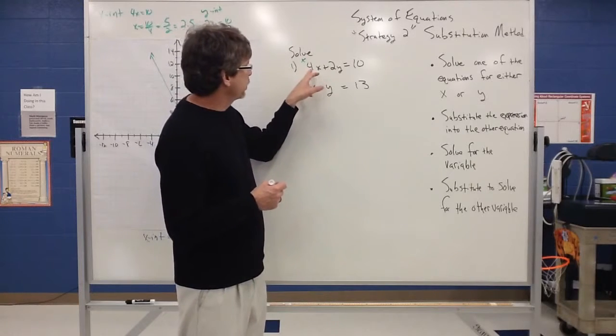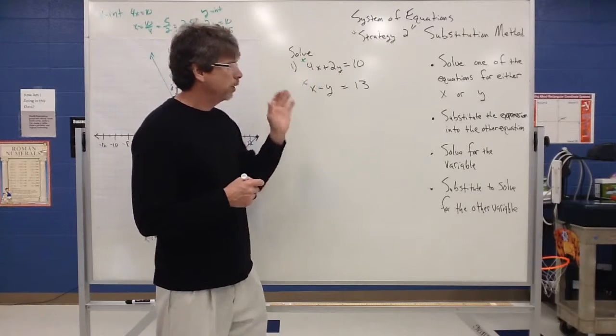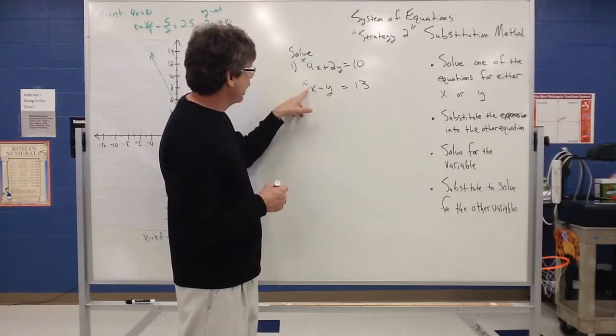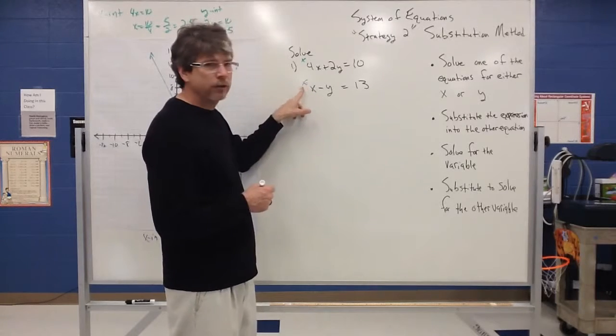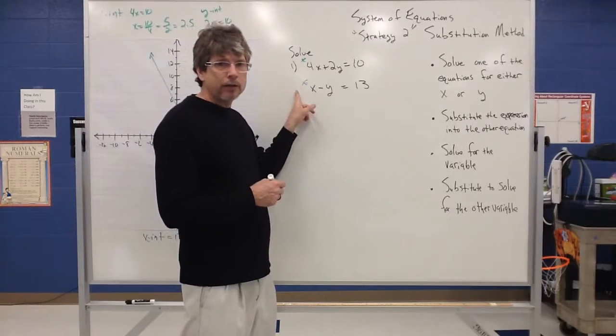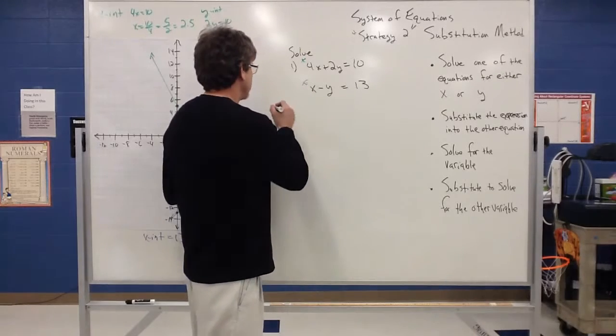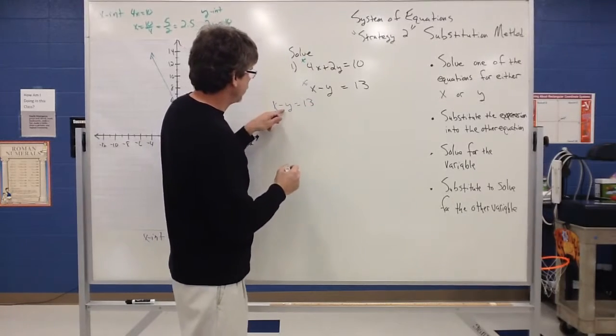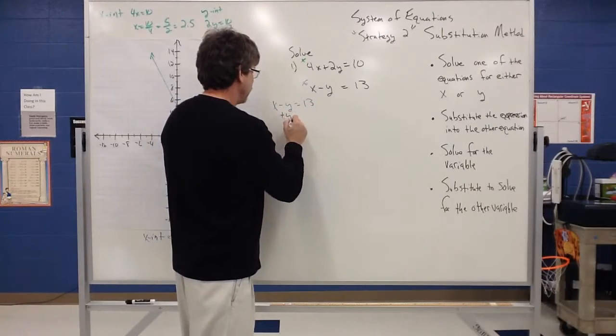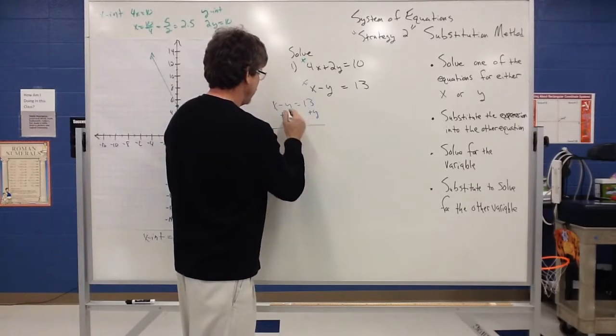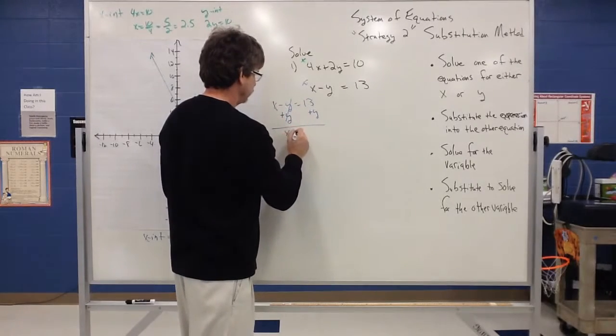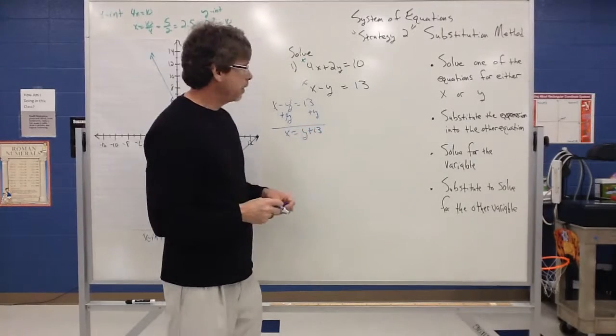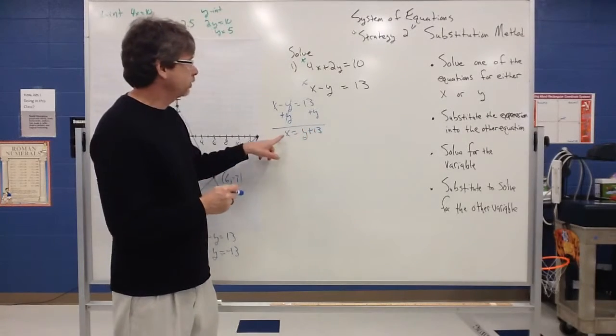Notice how the first equation has numbers in front of the x and the y. So I want to hold off on that if I don't need to use that one. Look at the second equation. Notice that x does not have anything in front of it. So I like this equation best because that's the path of least resistance. I can get x by itself rather easily. So I'm going to write down x minus y is equal to 13. And to get x by itself, I'm going to zero out this y with a positive y. And so I have that zeroes out. I have x equals then y plus 13.